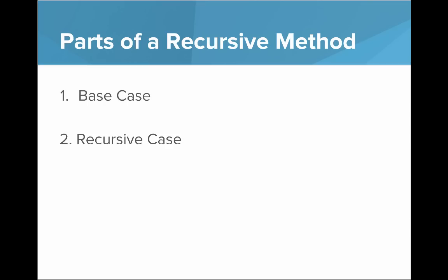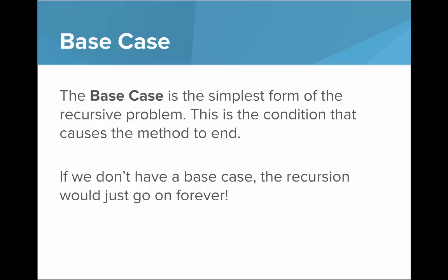So what are the parts of a recursive method? There's the base case and then there's the recursive case. The base case is the simplest form of the recursive problem. This is the condition that causes the method to end, and if we don't have a base case the recursion would just go on forever.